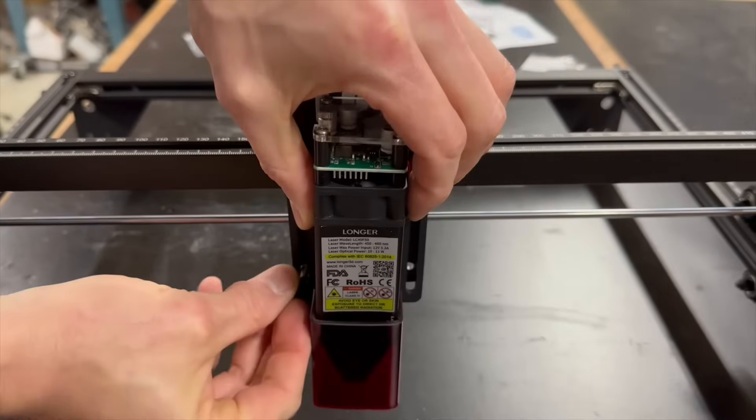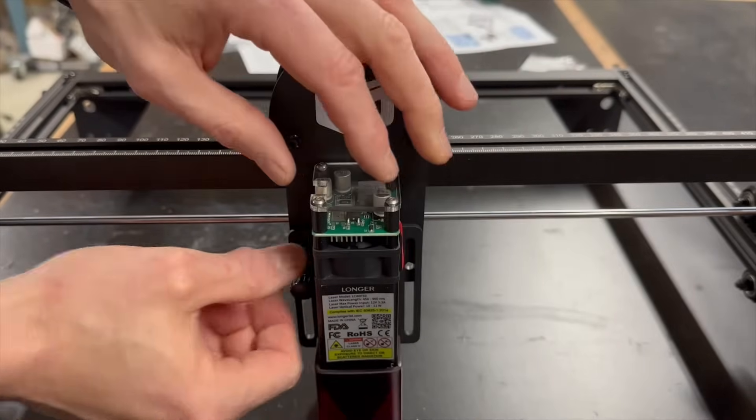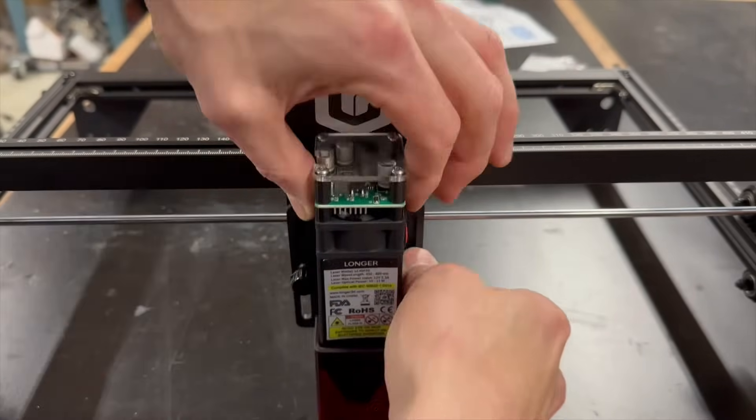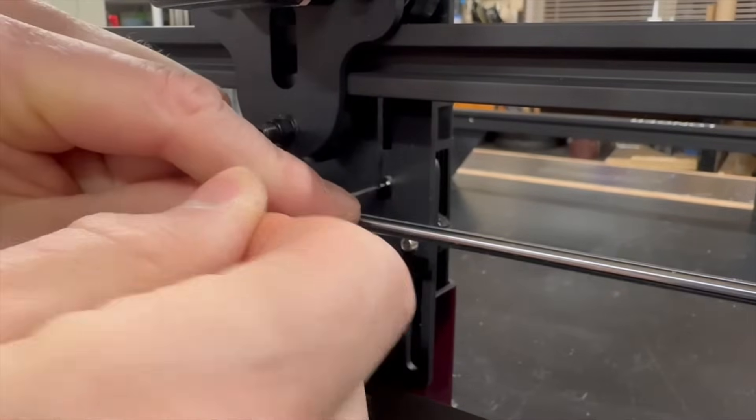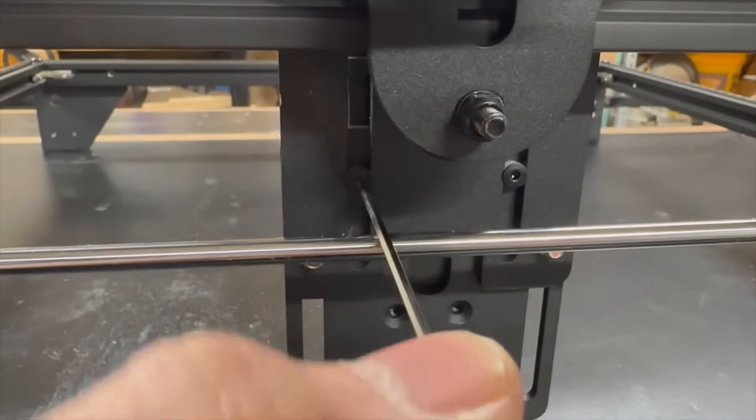Next up comes the laser assembly. It goes in with two thumb screws on the front to allow for laser height adjustment. Two very small screws with nylon bushings get installed on the back to keep the laser riding snugly on its track.